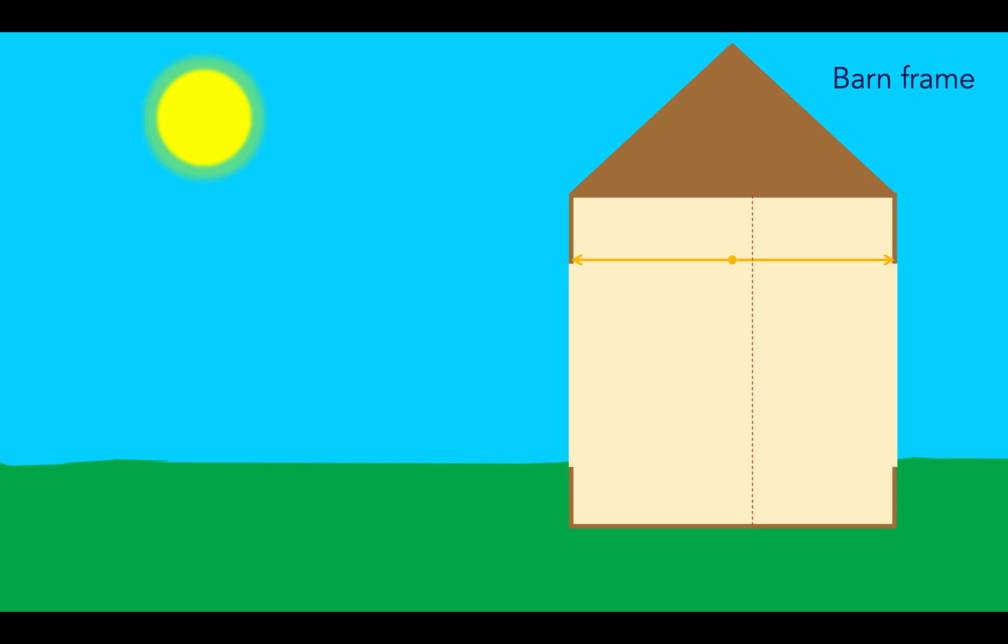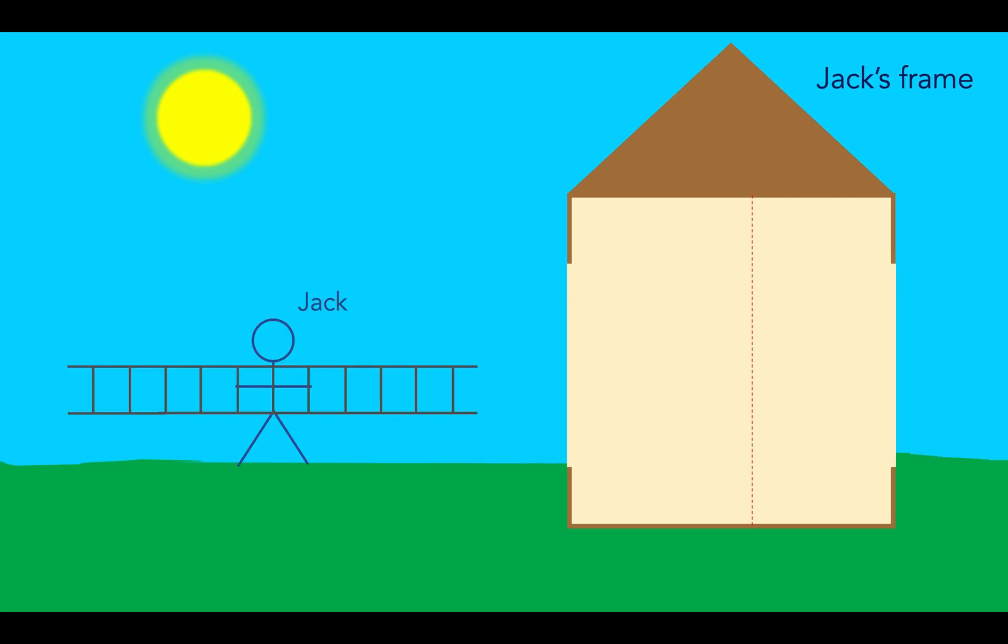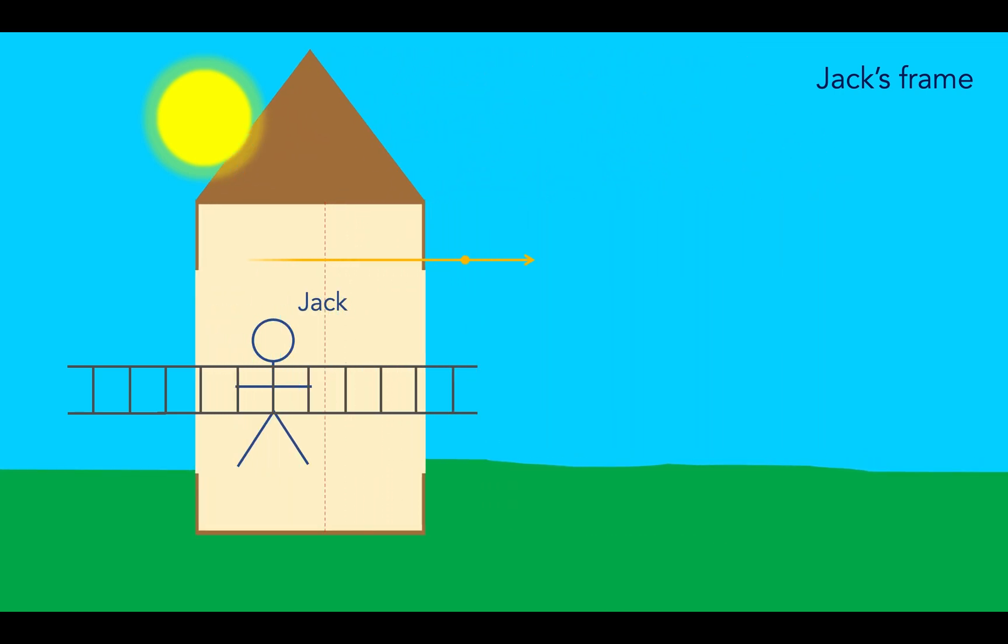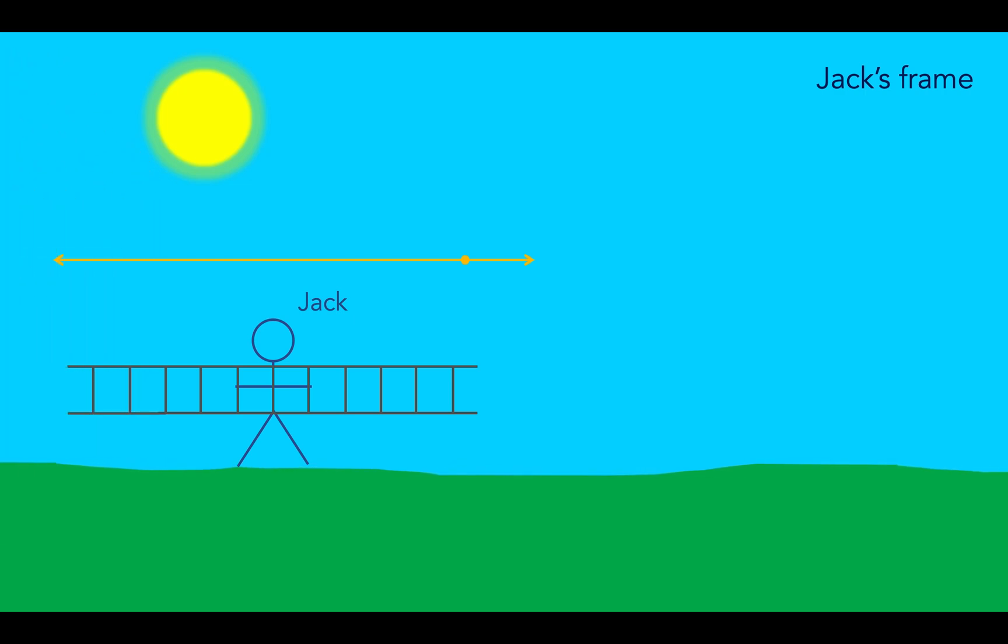So how does this look in Jack's frame? Well, now it's the barn that moves and contracts, and as we can see purely intuitively, the doors do not close simultaneously due to the different paths of the light rays.